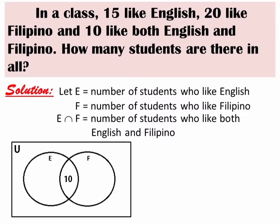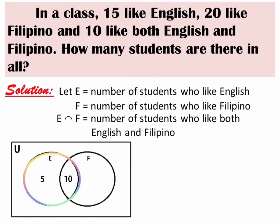15 like English. Since there are already 10 students in the intersection, and those 10 belong to the English class, instead of 15, we are just going to write 5 here. Why? We subtract the 10 in the intersection because 10 plus 5 equals 15. If we placed 15 inside the circle, the elements in set E would add up to 25, but the problem says 15 like English.